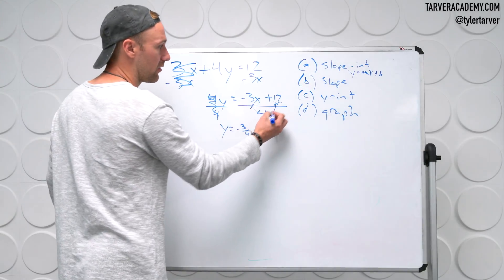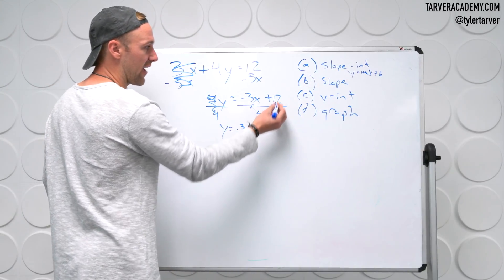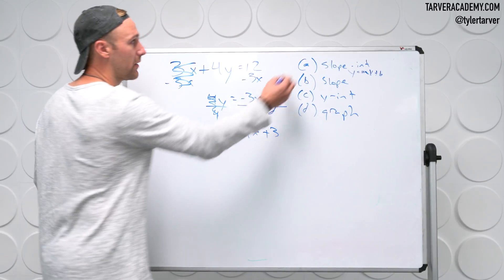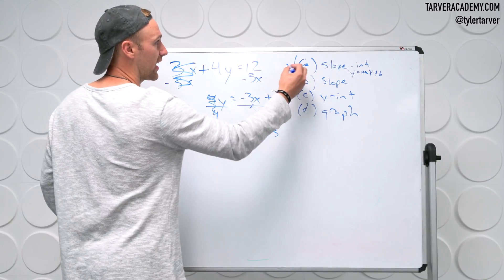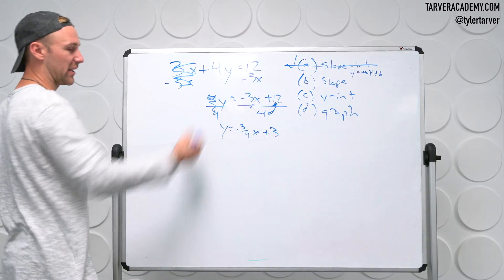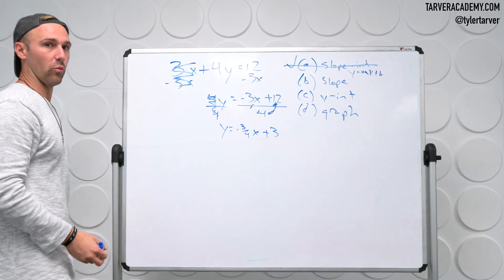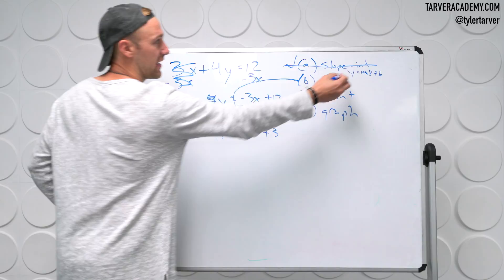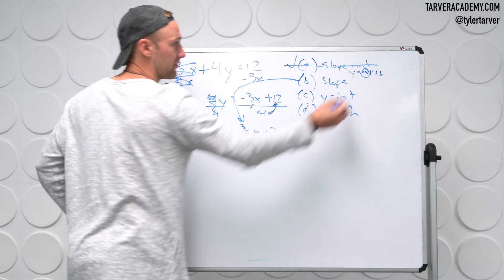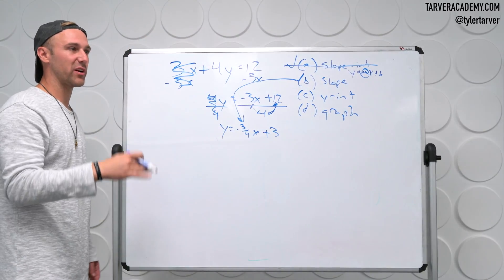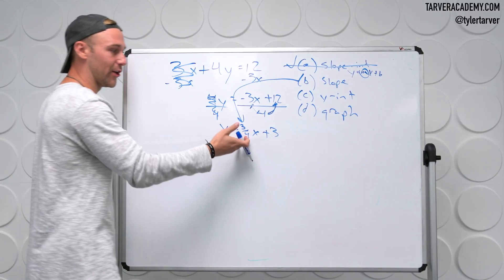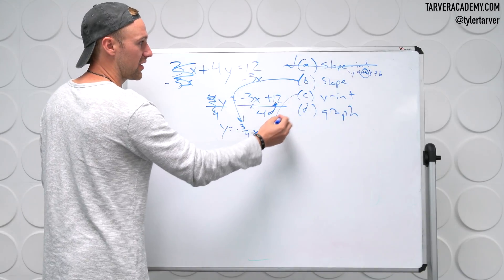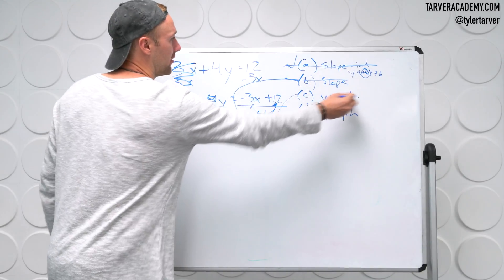Then divide 12 by 4, which gives us 3. So we now have slope-intercept form. The m — the coefficient in front of x — is our slope. Once it's in slope-intercept form, we can just look at it and say there's the slope, there's the y-intercept. Done.